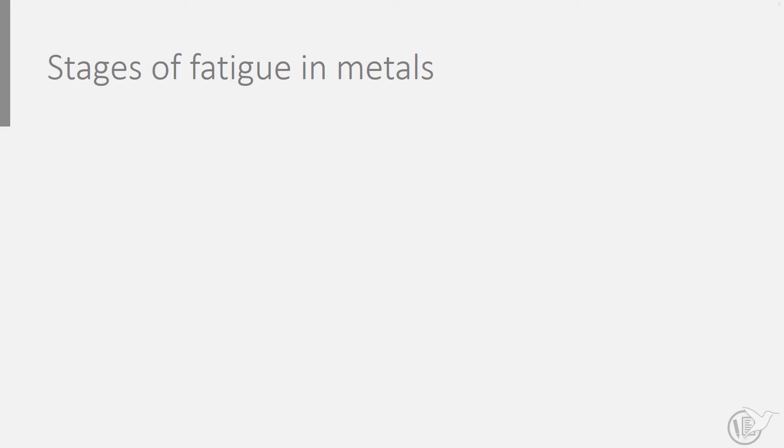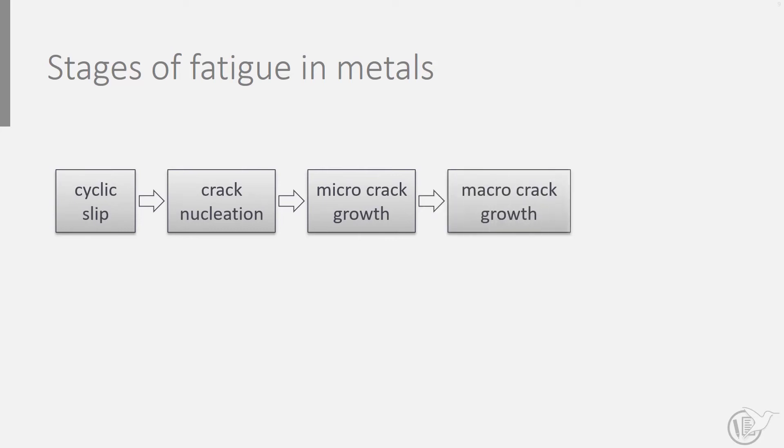Although different in detail for the various engineering materials, one in general can identify several stages in the fatigue life. Take for example metallic materials, where fatigue damage first nucleates at the microscopic level to form a microcrack. This then develops further to a crack visible at the macroscopic scale, eventually leading to failure.